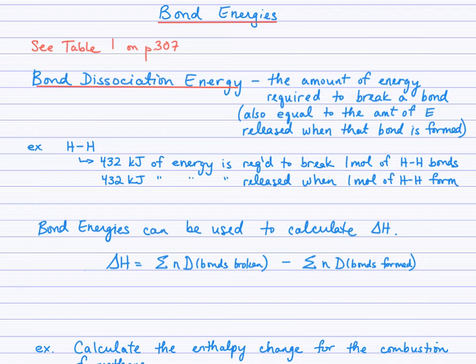We look up these bond energies in a table, and in your textbook you'll find that table on page 307. A bond dissociation energy is defined as the amount of energy required to break a bond. For example, as you'll see on page 307, table 1, a hydrogen-hydrogen single bond has a bond dissociation energy of 432 kilojoules per mole.